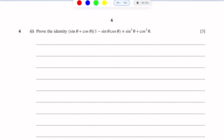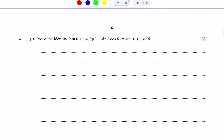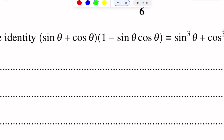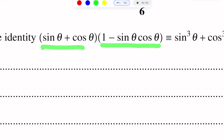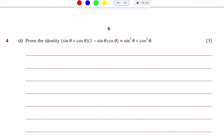Question number four, this question is from trigonometry. Part one: prove the identity — sin theta plus cos theta, into one minus sin theta cos theta, is identically equal to sin cube theta plus cos cube theta. We need to take the left hand side and make it equal to the right hand side.